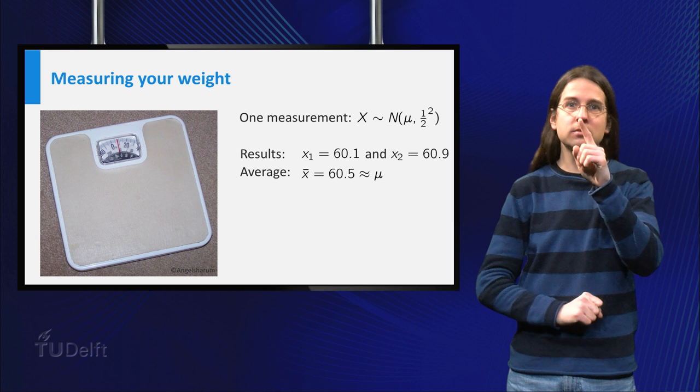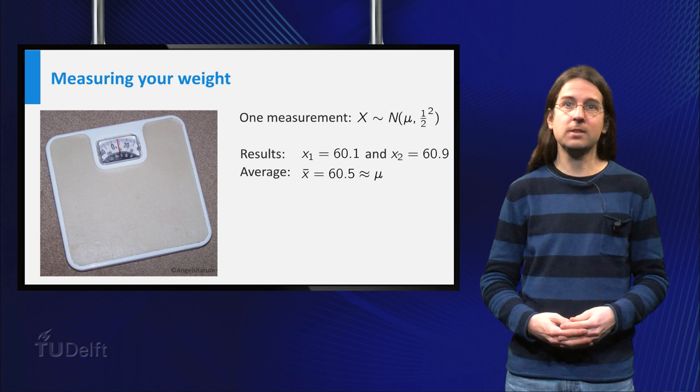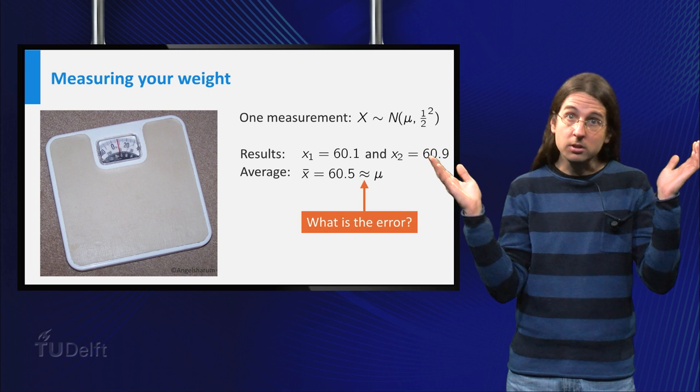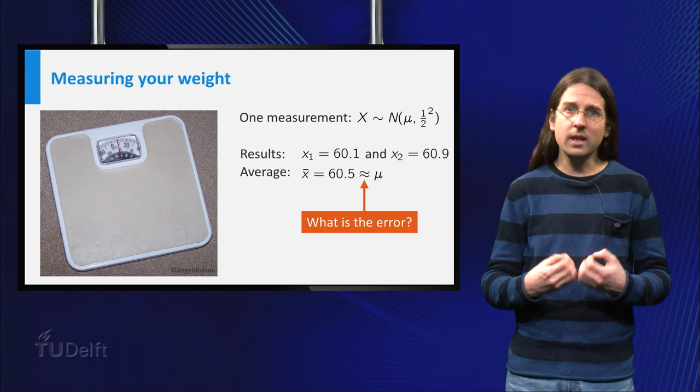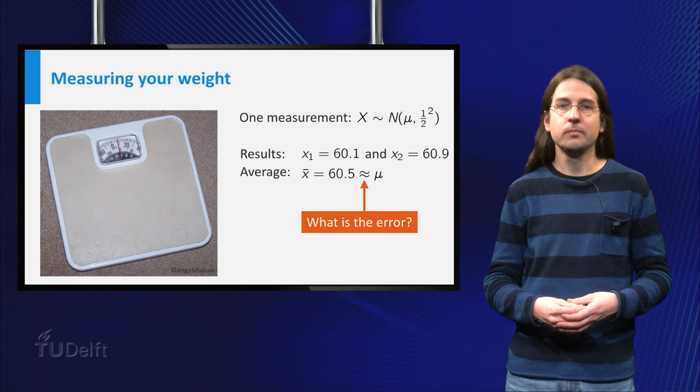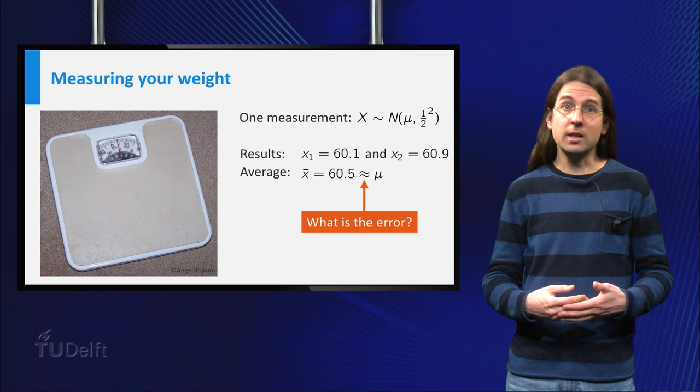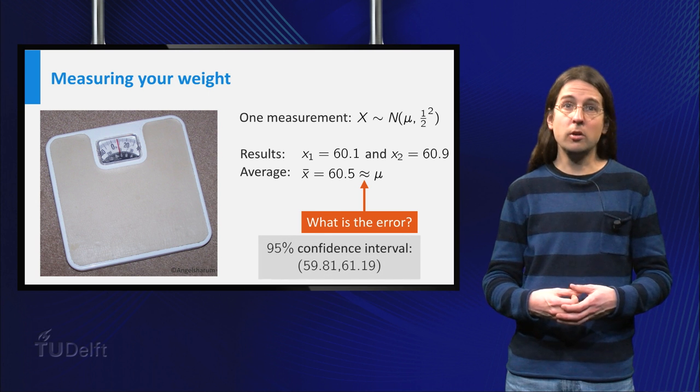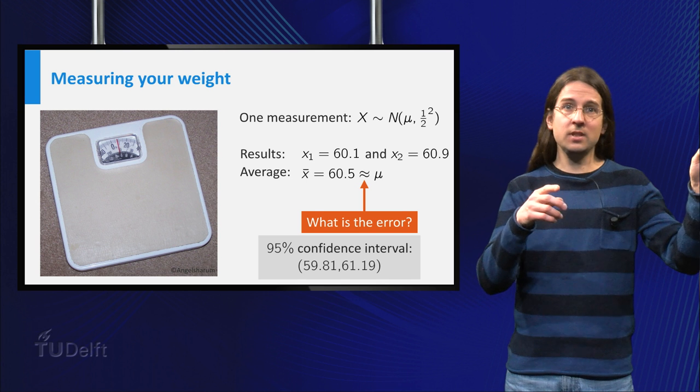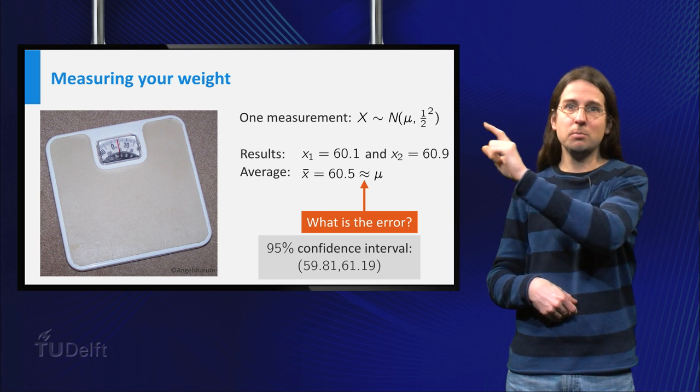The average of these two numbers, 60.5 kilograms, is an estimate for your true weight. But what is the error? Well since you don't know your true weight, you cannot calculate the error exactly. But as we will calculate in a minute, a 95% confidence interval of your weight is the interval from 59.81 to 61.19.